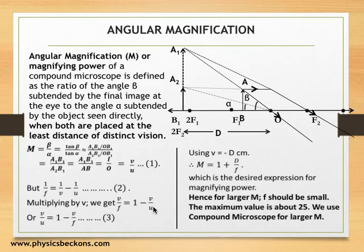Transposing, you get v over u equal to 1 minus v over f. v, the image distance, as you can see from the diagram, is minus D. Applying the sign convention, so v is minus D, which gives you M is equal to 1 plus D over f, which is the desired expression for magnifying power.